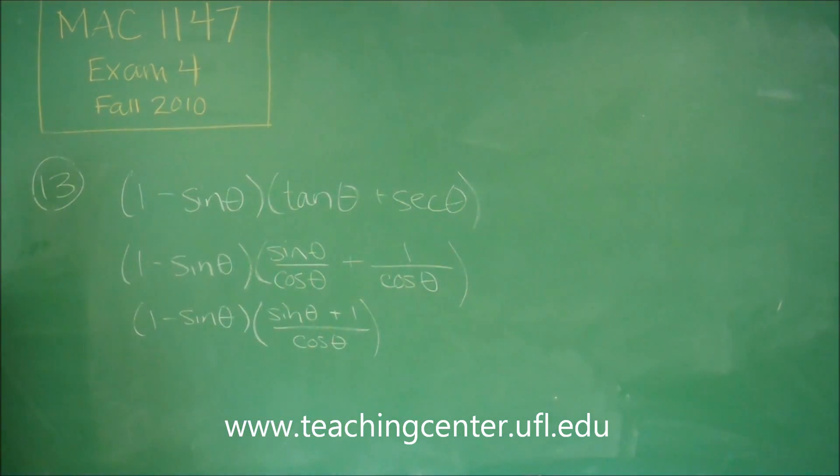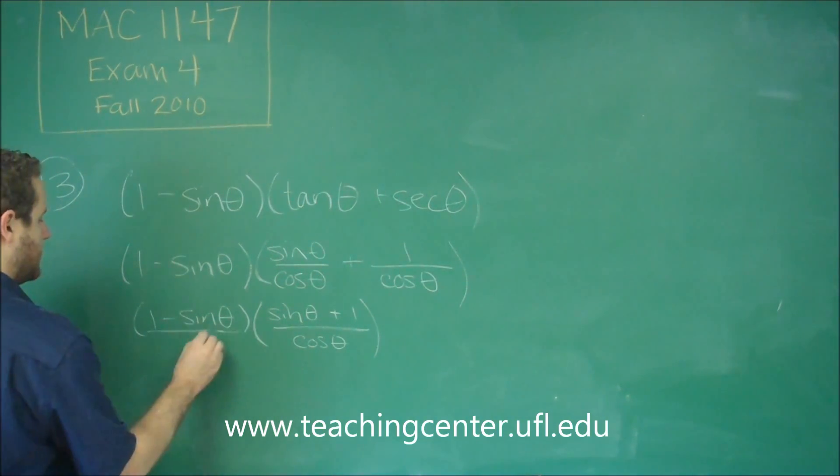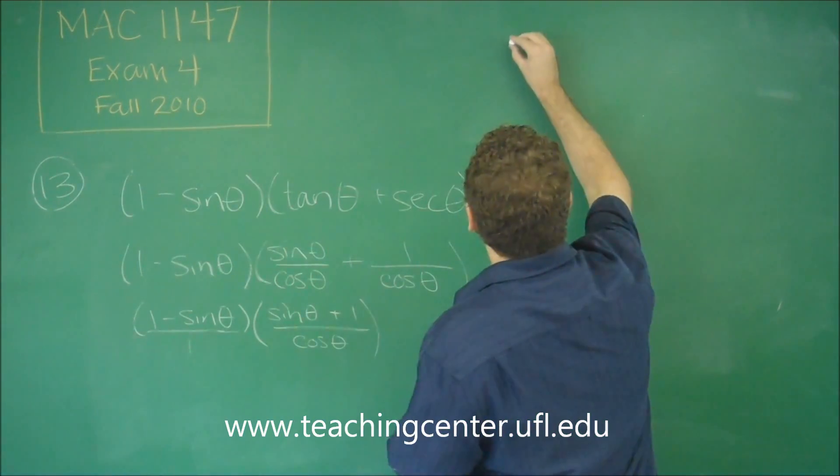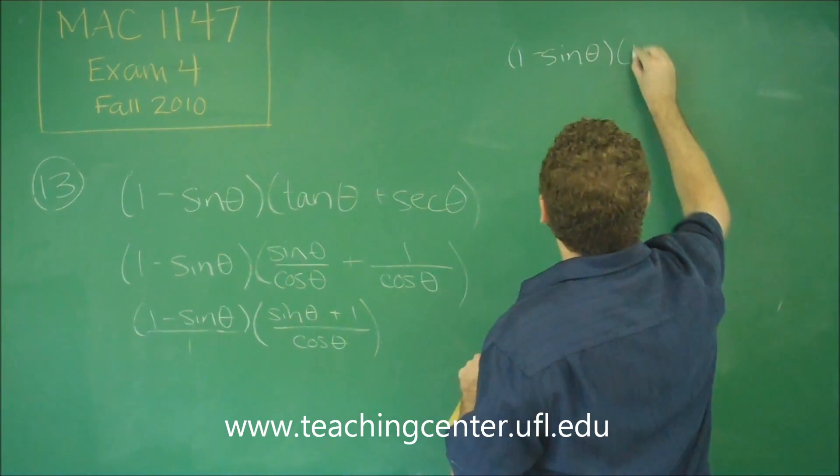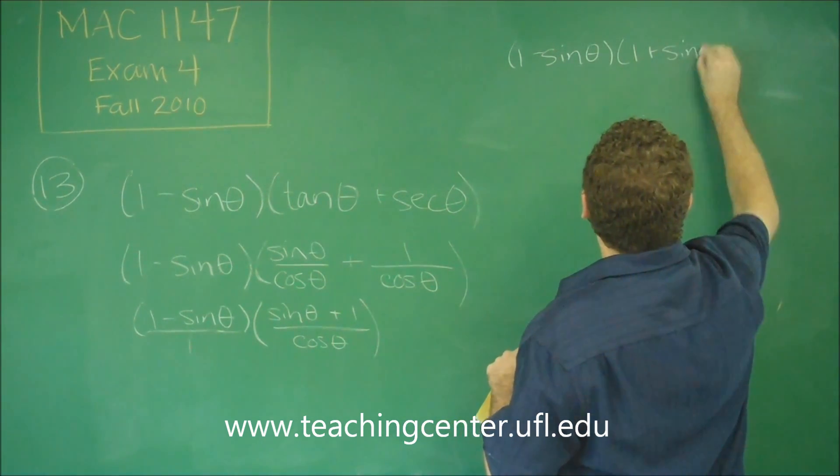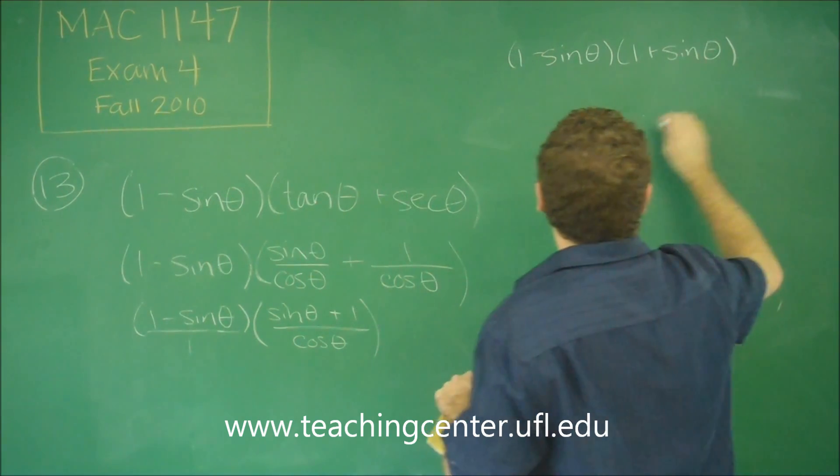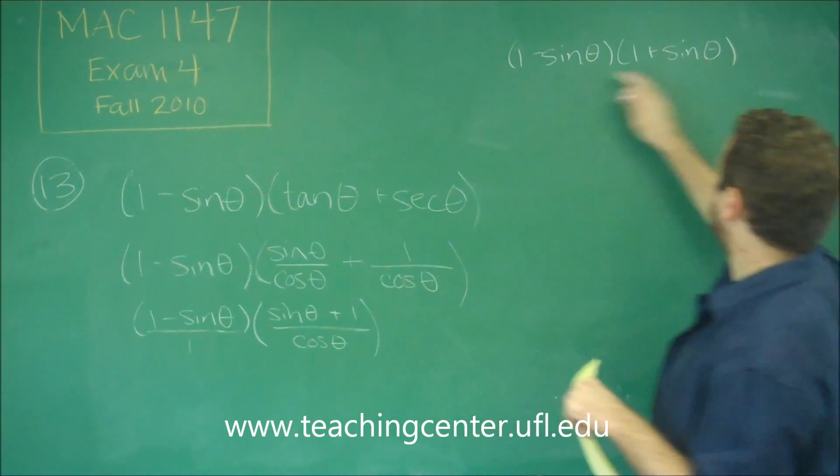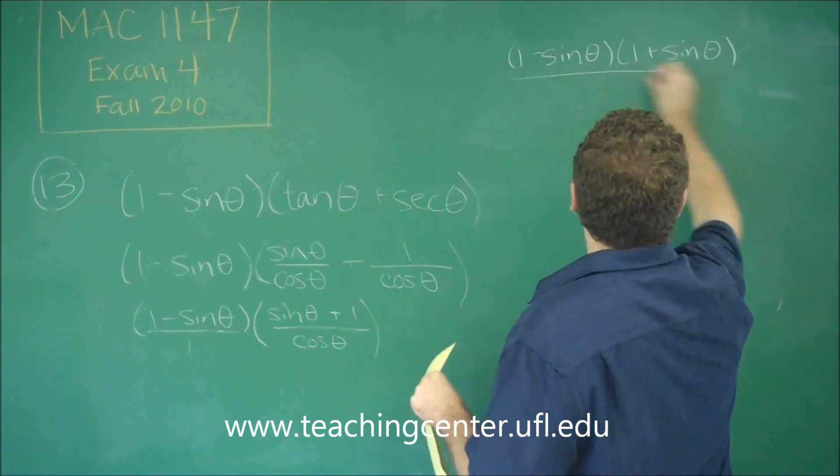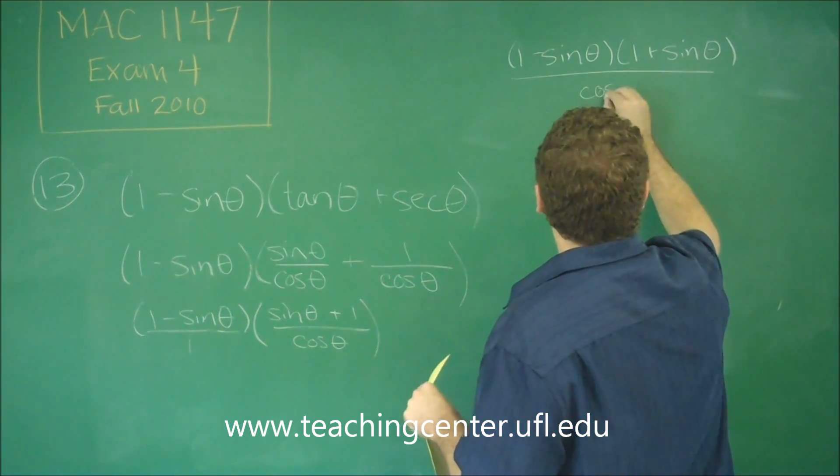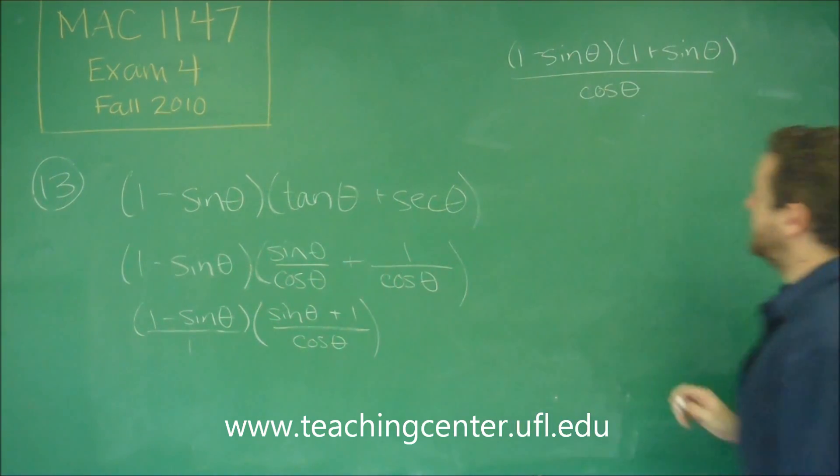And now if we just reverse that order and multiply all this together, because you can imagine this is over 1, what we're going to get is 1 minus sine theta, 1 plus sine theta. So I just reversed the order of these two so that it looks the same for those. But since it's addition, that's fine. Over cosine theta.